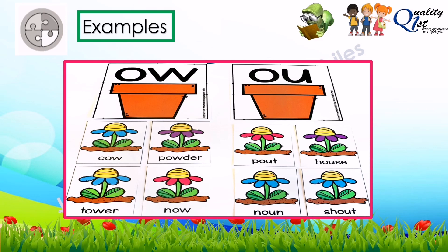Now let's have the diphthong OW and OU. For OW, we have: cow, powder, tower, and now. For OU, we have: house, noun, and shout.